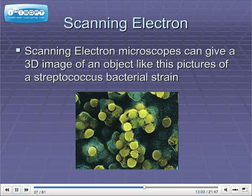Scanning electron microscopes can give a 3D image of an object, like this picture of a streptococcus bacterial strain. You can see they really look very spherical here.